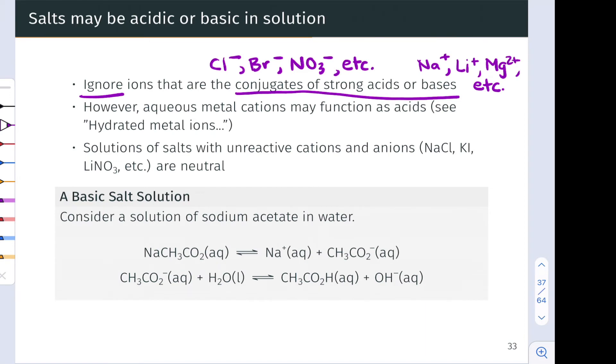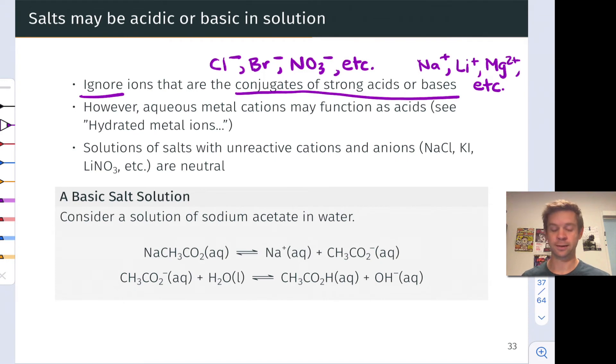Do note, however, that metal cations can function as acids. Metal cations, when dissolved in solution, have coordinated water molecules, and those water molecules can surrender protons, meaning the metal cation can act as an acid. A famous example of this is Fe3+.